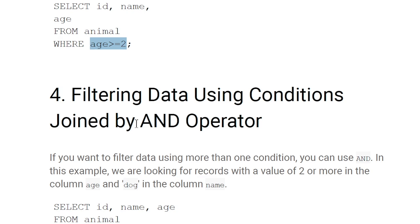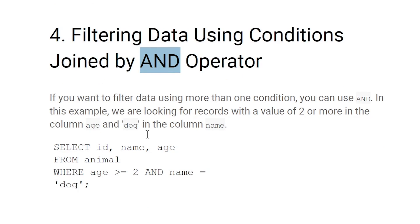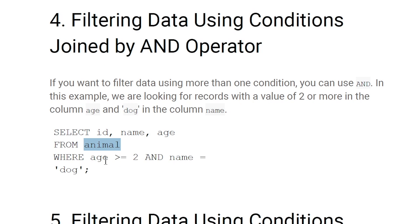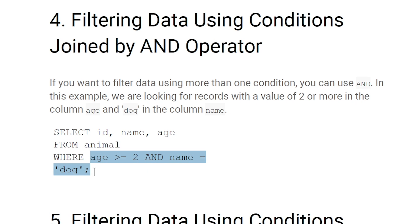Filtering data using conditions joined by the AND operator: if you have multiple conditions joined by AND, both conditions must be true to filter the data. For example, SELECT id, name, age FROM animal WHERE age >= 2 AND name = 'dog' — only rows satisfying both conditions will appear in the result.